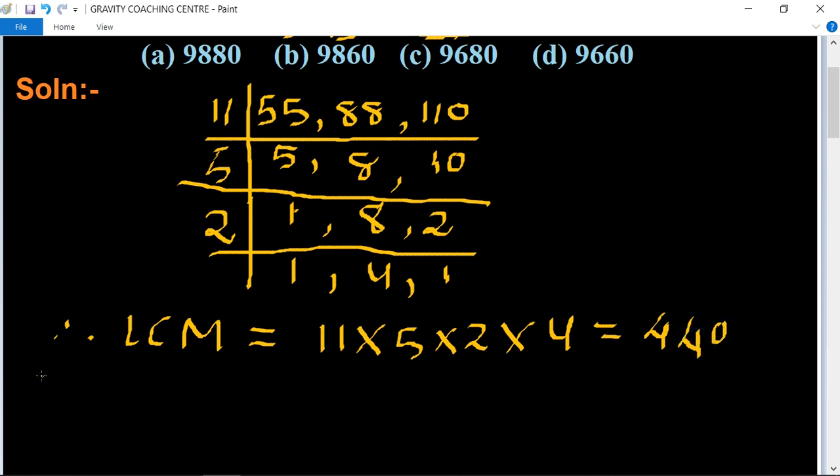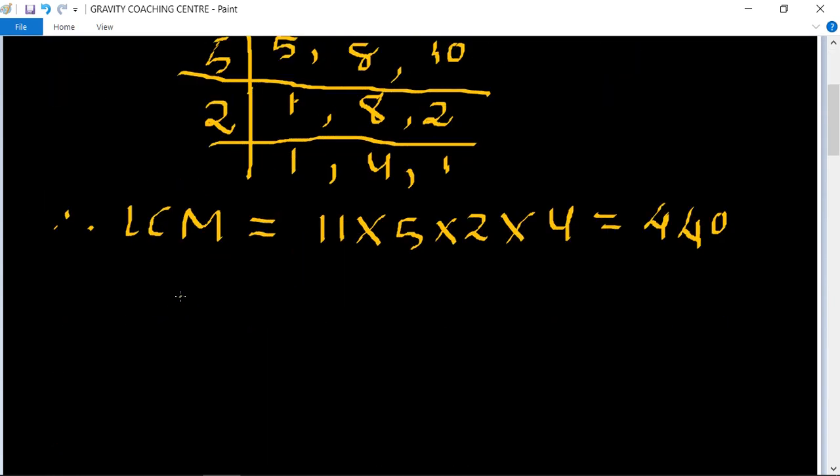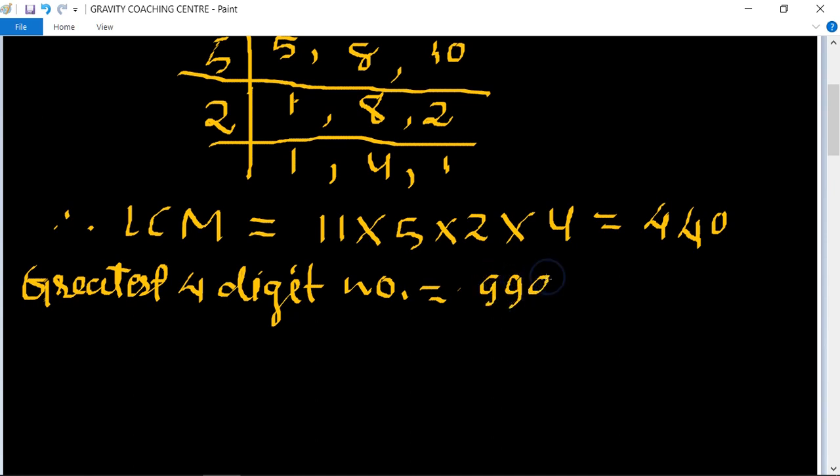And we know that the greatest four digit number is 9999. So now we have to find the greatest four digit number which is a multiple or divisible by 440.